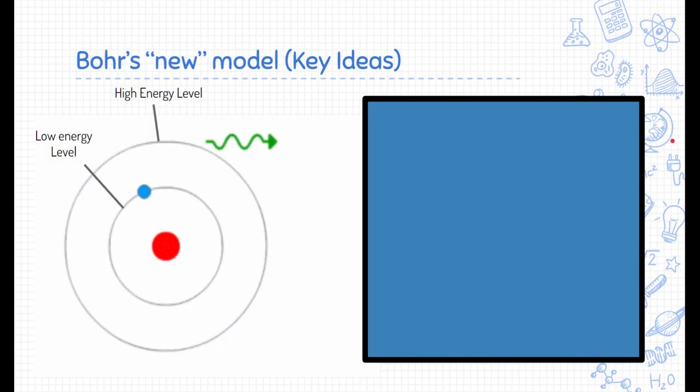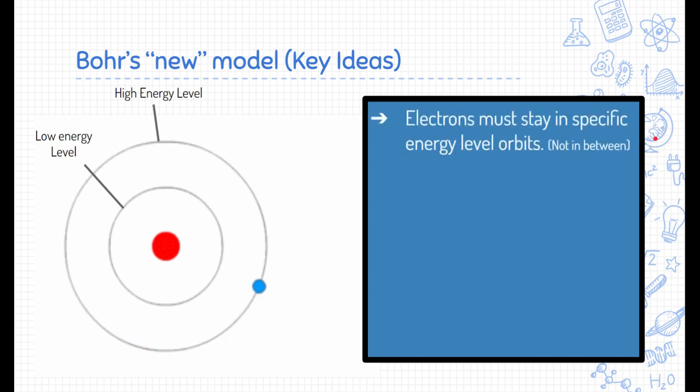Now, let me tell you some of the key ideas that he figured out using his experiments and mathematical equations. He said that electrons have to stay in specific energy level orbits. So, if you look here, our electron has to stay within these ringed areas. Well, that helps solve our problem that the electrons don't spiral into the nucleus. Electrons cannot exist anywhere but these specific energy levels.